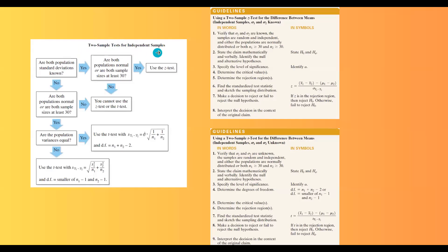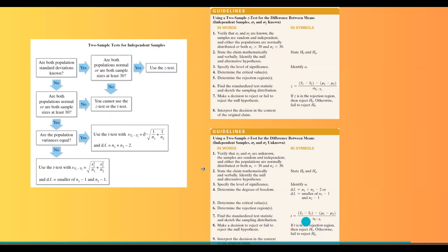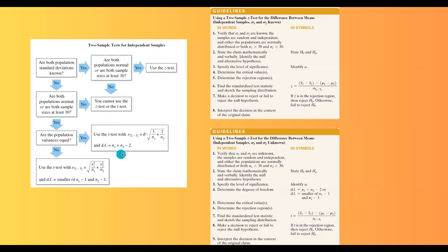When you have two-sample tests for independent samples, these are the steps to follow. If population standard deviations are given, use a z-test. However, if sigma 1 and sigma 2 are missing, use a t-test. If the population variances are equal, use degrees of freedom n1 plus n2 minus 2. If the population variances are not equal, select the smallest of n1 minus 1 and n2 minus 1.